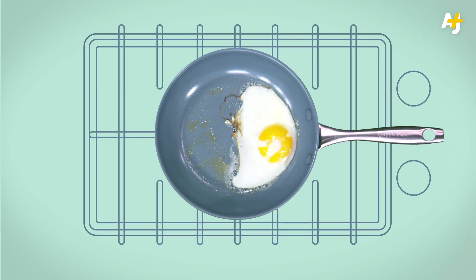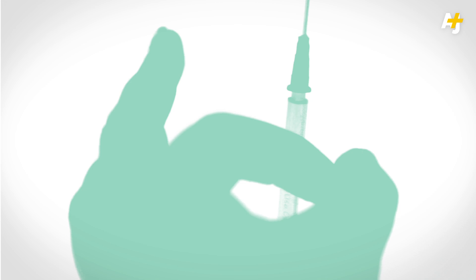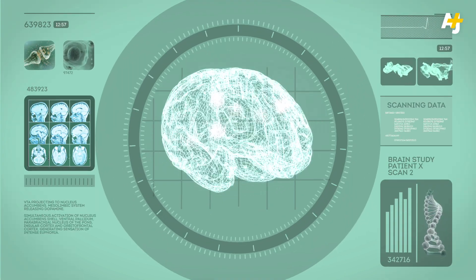This may be your brain on drugs, but what actually happens in the mind of someone addicted to drugs? It all starts with the brain, specifically something called the reward center.